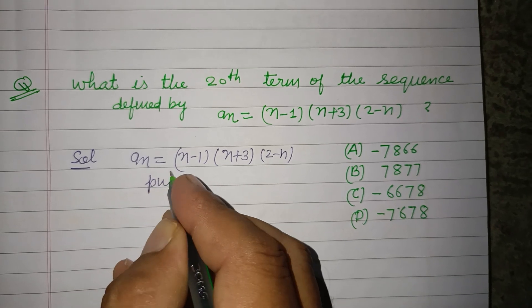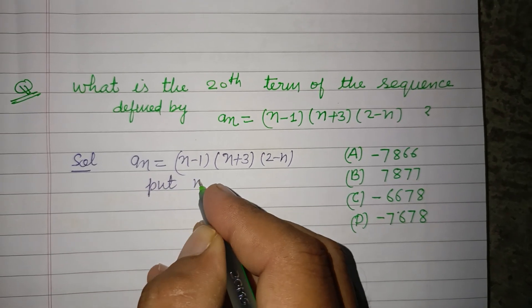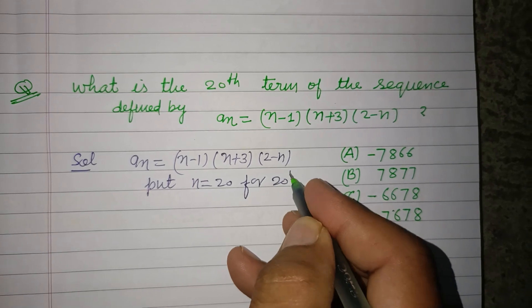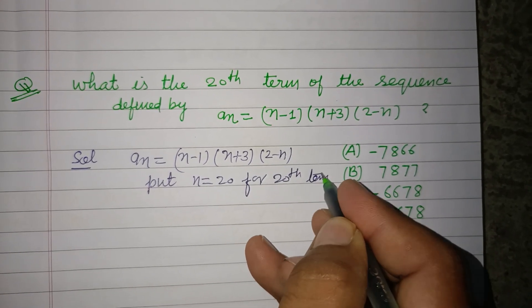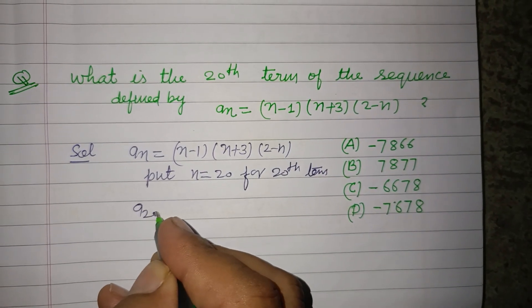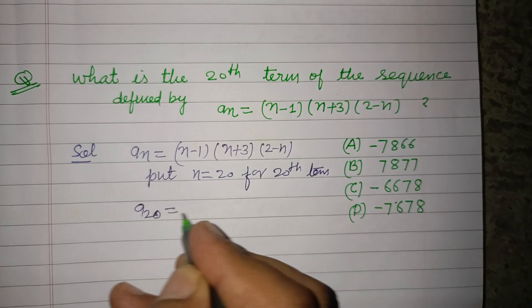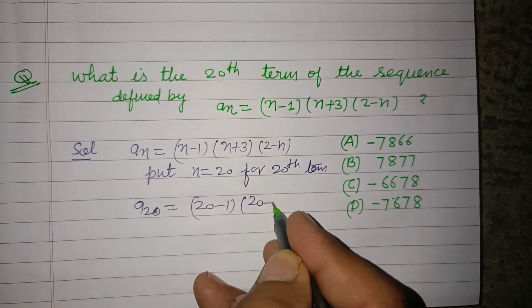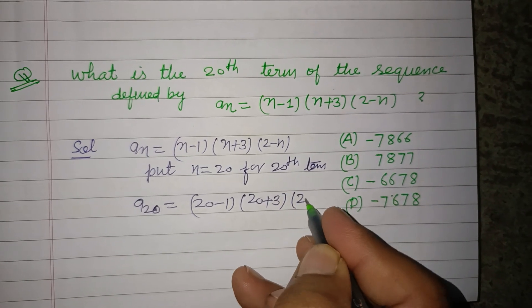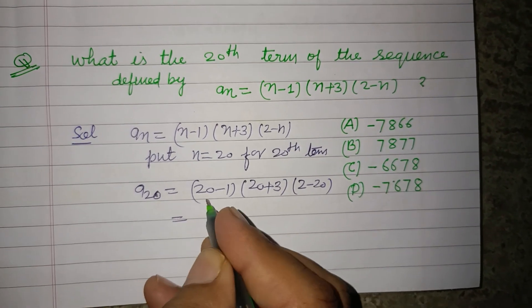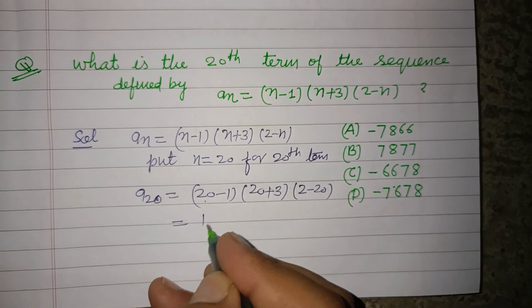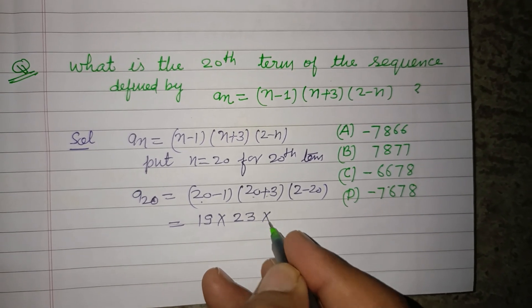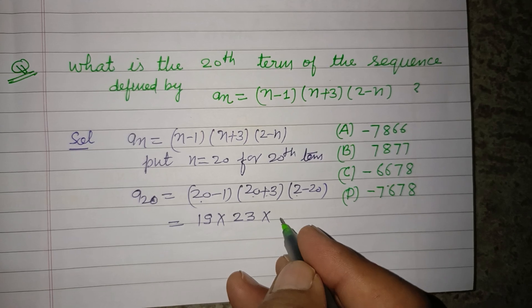Put n equal to 20 for the 20th term. So a(20) = (20-1)(20+3)(2-20). That gives us 20 minus 1 = 19, 20 plus 3 = 23, and 2 minus 20 = -18.